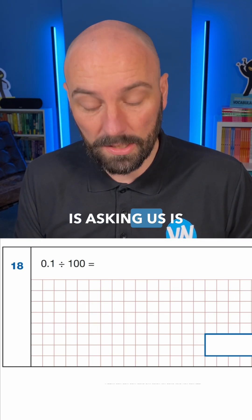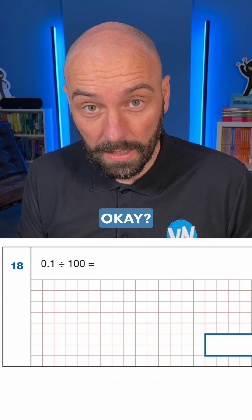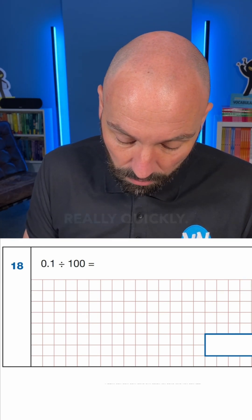All the question is asking us is to make this number 0.1 100 times smaller. So we're going to divide it by 10 divided by 10. So we can go to place value to solve this. So let's do this really quickly.